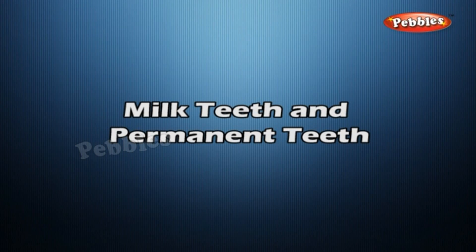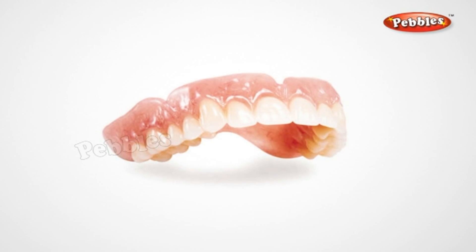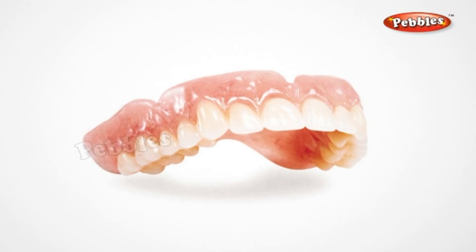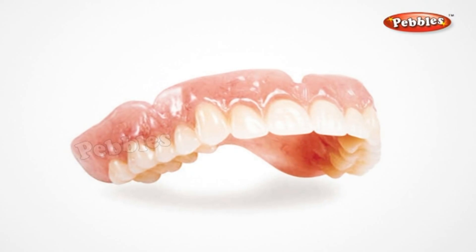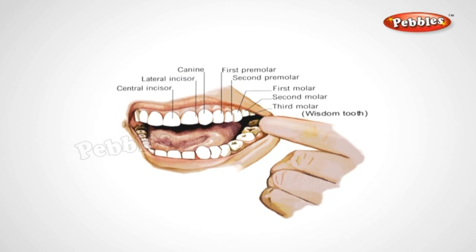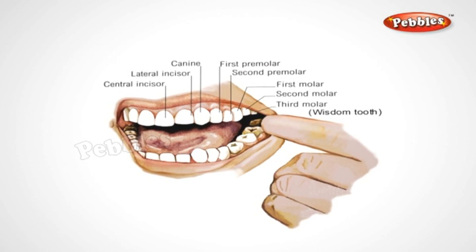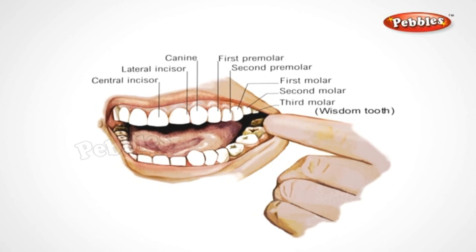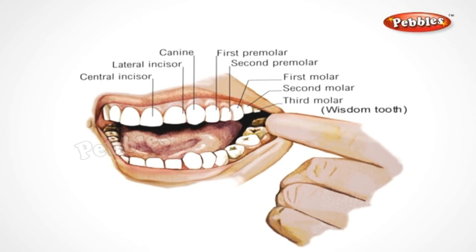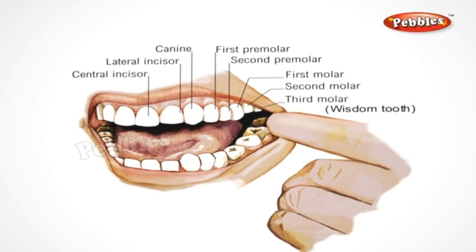Milk Teeth and Permanent Teeth. The first set of teeth grows during infancy and falls off between the ages of 6 to 8 years. These are termed milk teeth. The second set that replaces them are the permanent teeth, which may last throughout life or fall during old age or due to some dental disease.